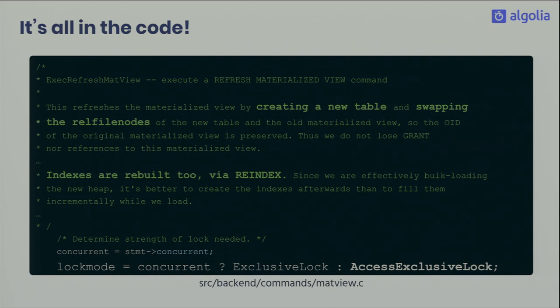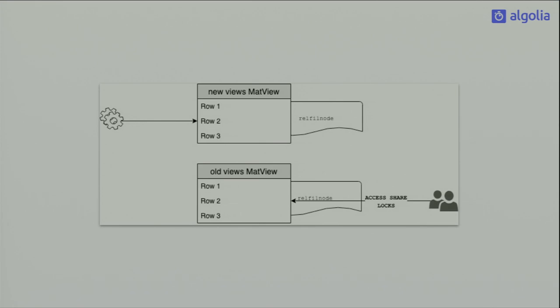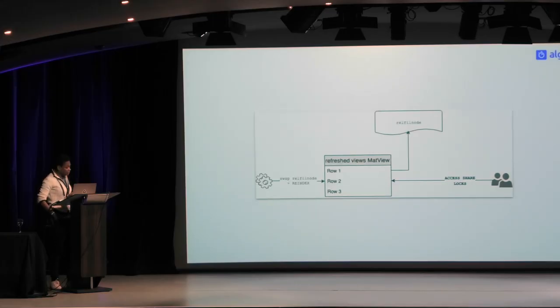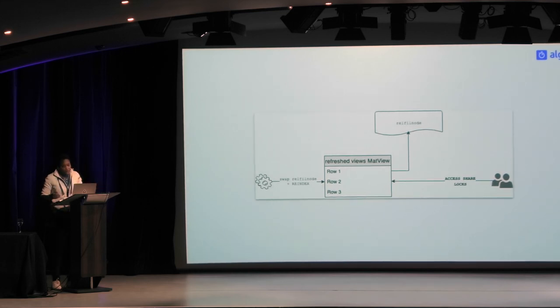Why does it work that way? It's all in the code and easy to read. When refreshing a materialized view without concurrent mode, PostgreSQL acquires an access exclusive lock. The engine creates a new table, executes the saved query, then swaps the relfilenode of the old table to point to the new one. Since it's a new file, the engine also has to re-index, which also requires an access exclusive lock.